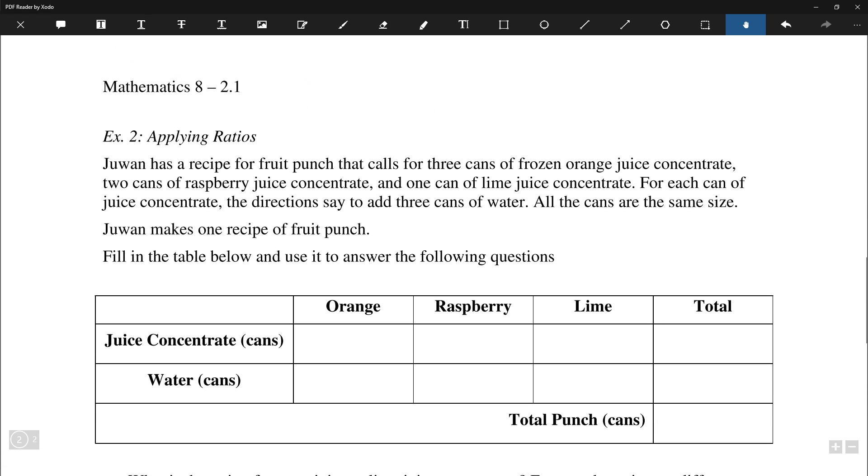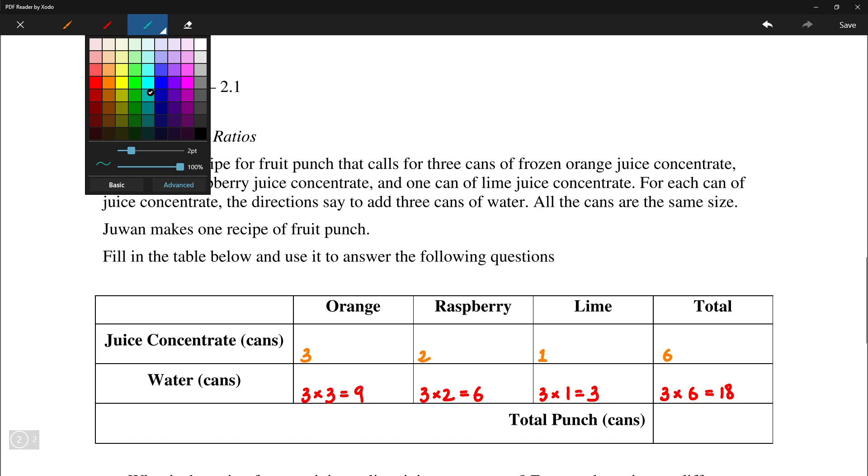So let's look at a second example here. Looking at a recipe for fruit punch, which contains 3 cans of orange juice concentrate, 2 cans of raspberry juice concentrate, and 1 can of lime juice concentrate. So there are 6 cans of juice all together. For every can of juice concentrate, we add 3 cans of water. So in the first part here, we're looking at 3 times 3, which is 9 cans of water, followed by 3 times 2, which is 6 cans of water. And then 3 times 1, which is just 3. So that would be 18 cans of water altogether. Also, 3 times 6 is 18. So altogether, the total punch, that would be 24 cans altogether.